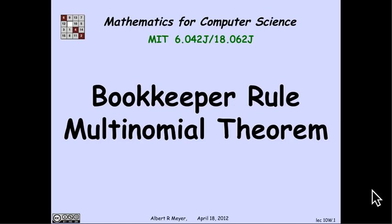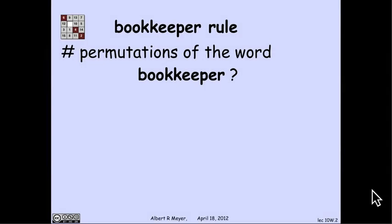The binomial theorem extends to a thing called the multinomial theorem, where instead of taking a product of a sum of two things, you take the product of a sum of k things to get the multinomial theorem. And what underlies it is a rule that we're going to call the bookkeeper rule, and here's why.